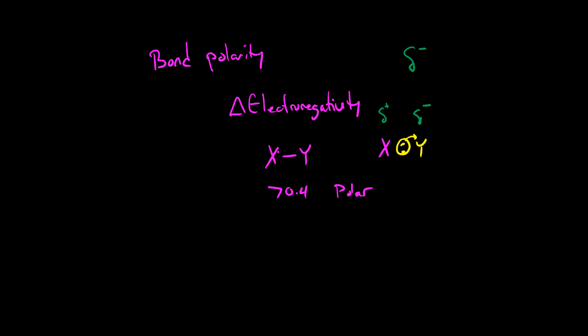And the other way we show this, we can show it as an arrow with the positive end on the partial positive side and the arrow pointing towards the partial negative. This would tell us that this side of the bond is partially negative. This side of the bond is partially positive.